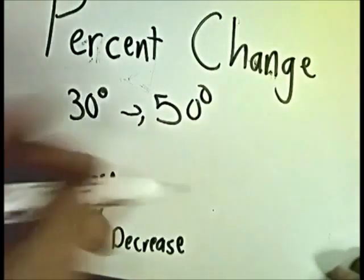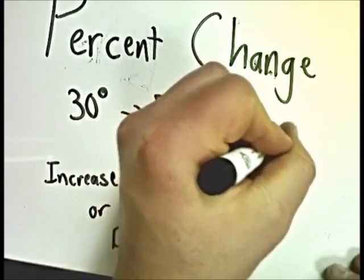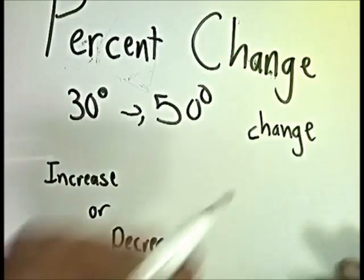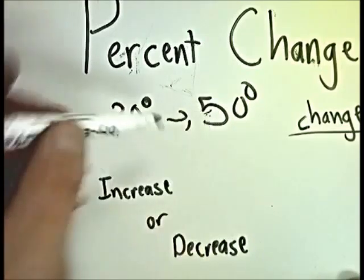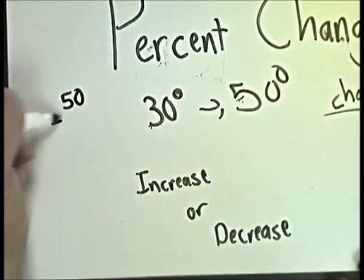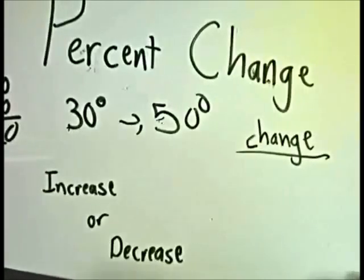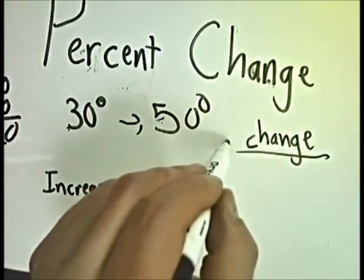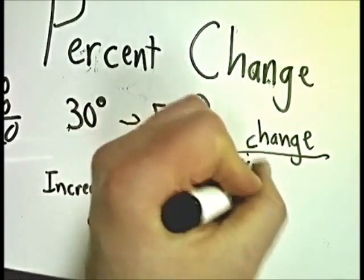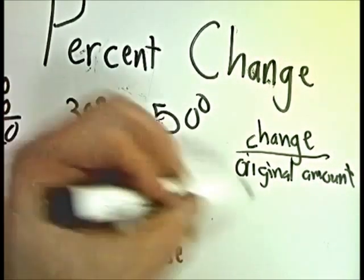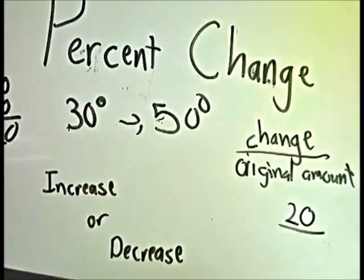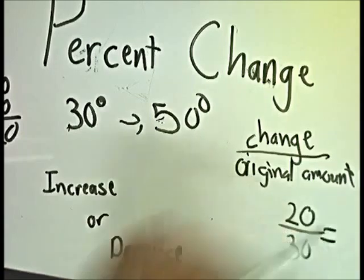When I set up a percent change, the first thing I need to do is figure out the change — how much did it actually change? In this case I went from 30 to 50, so you always take the second minus the first so you know if it's an increase or decrease. So I do 50 minus 30, which is 20. To do the percent change, all I have to do is take the actual change over the original amount. In this case that would be 20 over 30.